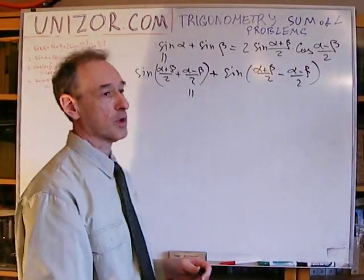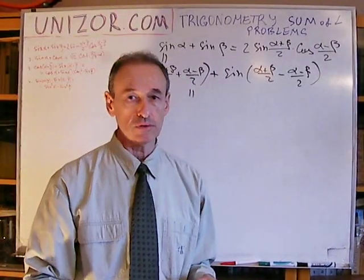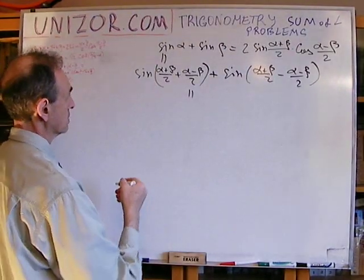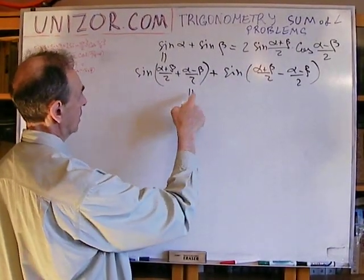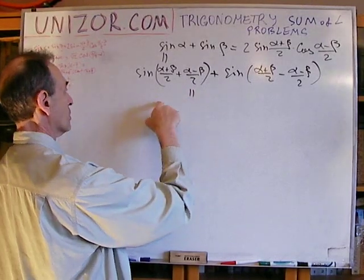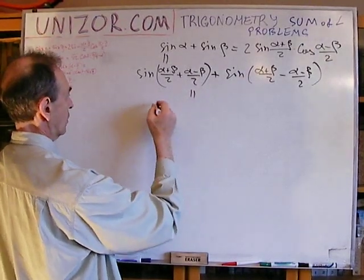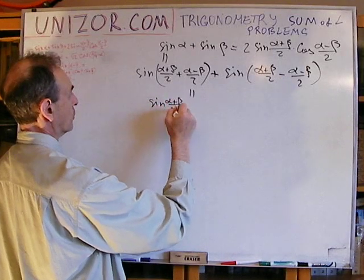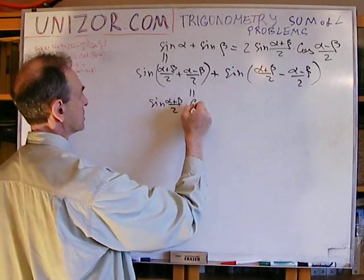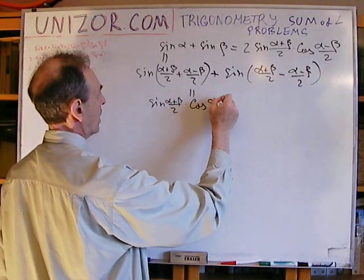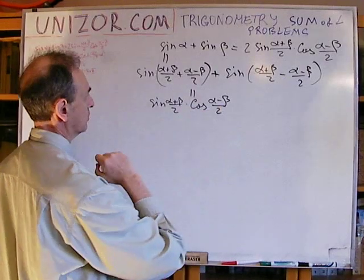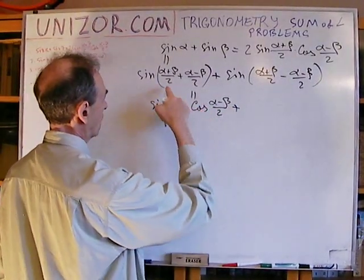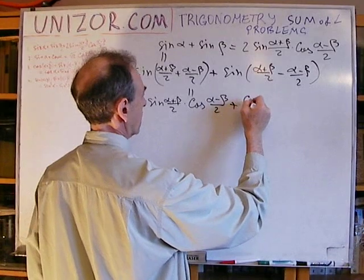Now we will use the formula for sine of the sum of two angles, so it's sine and cosine plus cosine sine. It's sine of alpha plus beta over two times cosine of alpha minus beta divided by two, plus cosine of this times sine of that.